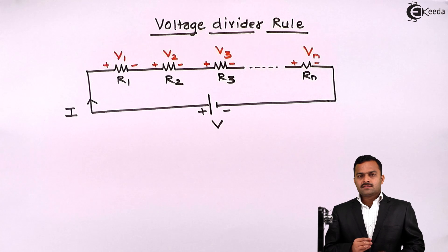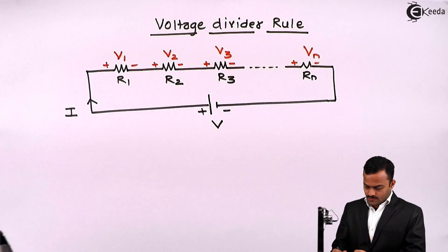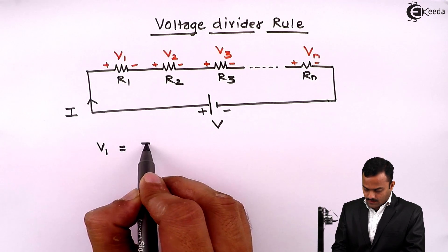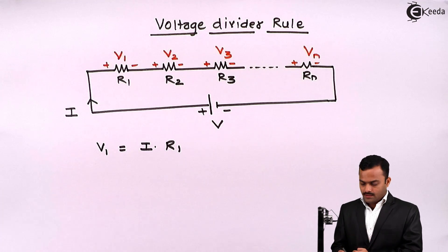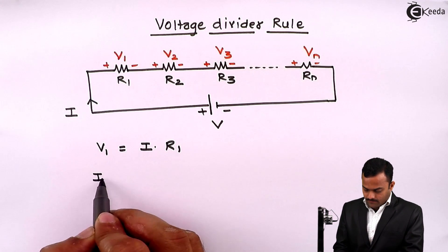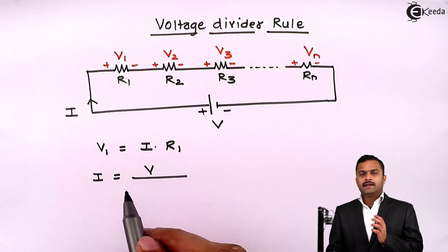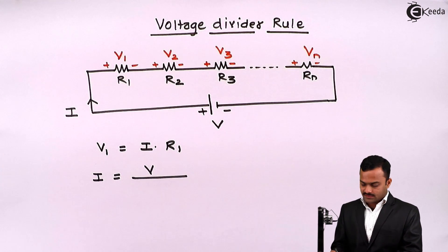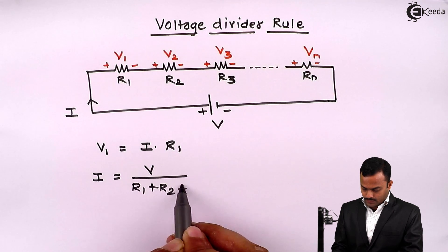Now suppose I want to get the expression of V1. V1 is nothing but I into R1, simple Ohm's law, and I will be equal to voltage supply divided by total resistance in the circuit, that is R1 plus R2 plus R3 and so on.